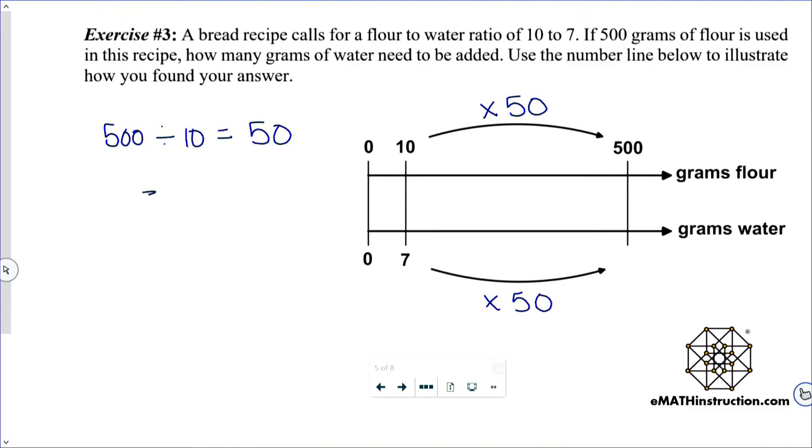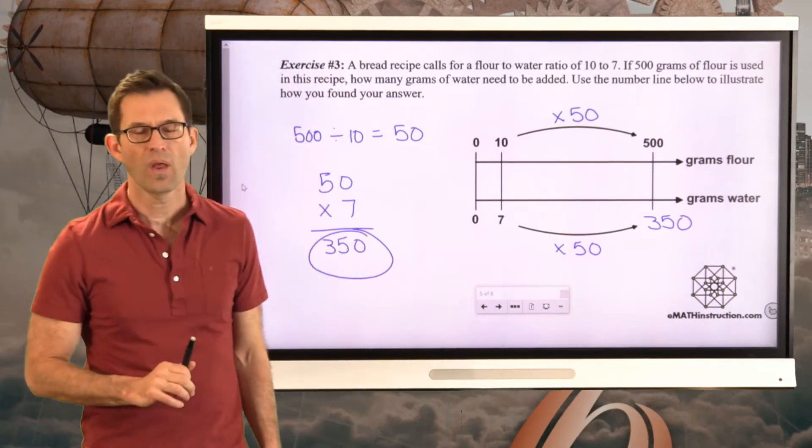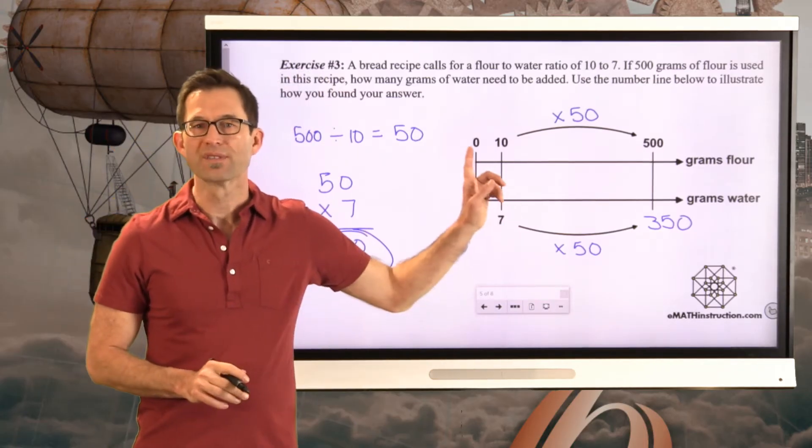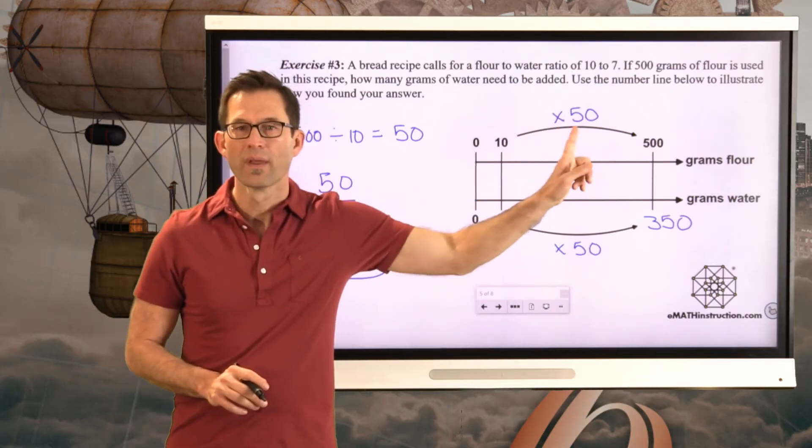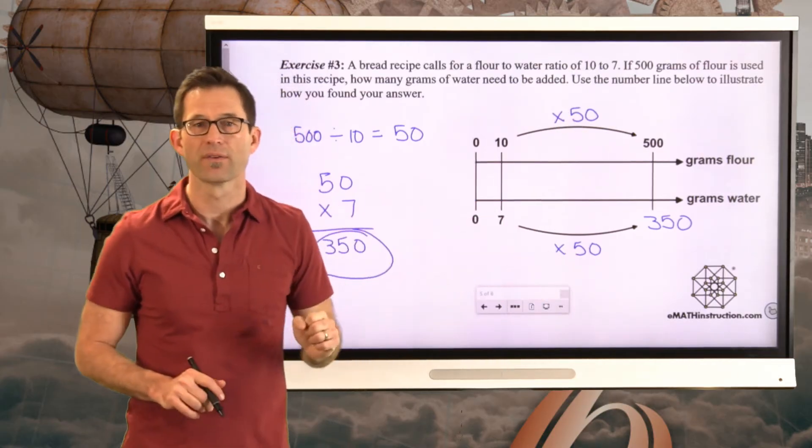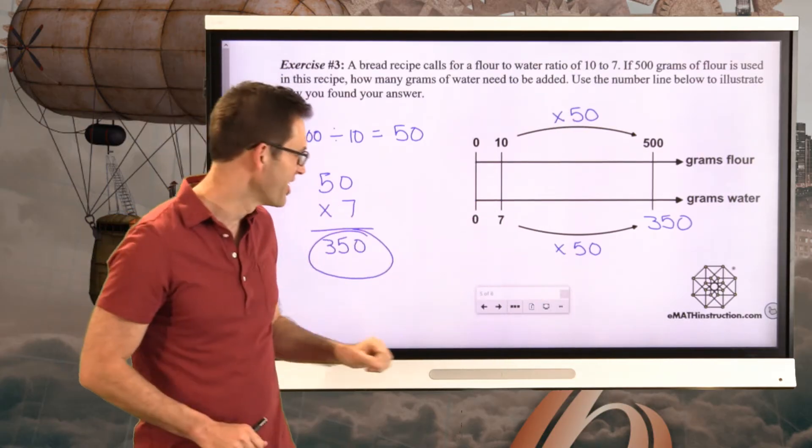So if I have 50 times 7, that tells me I must have 350 grams of water. It's all about knowing what we scaled one of these things by and then using it to scale the other. Let's keep working on this.